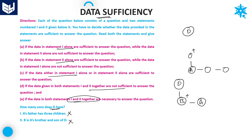If you combine both statements, you get that D is a father, A's brother is B, but we still don't know the gender of A. So we cannot say exactly how many sons D has — even combining both statements, you will not get the answer. Therefore, the required answer is option D: both statements together are not sufficient.